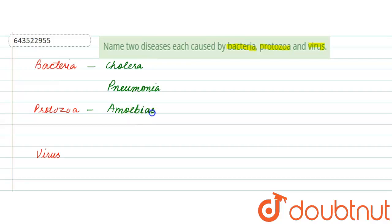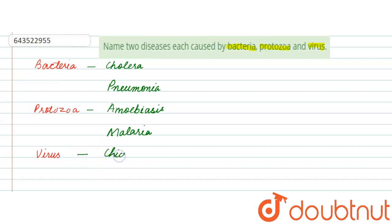The second protozoan disease is malaria. Now proceeding towards diseases caused by viruses: firstly we will mention chickenpox, and the next one is AIDS. So these are the diseases caused by the given organisms.